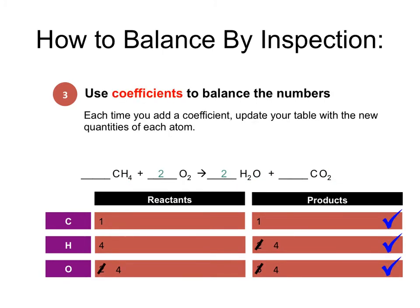Now we're going to use coefficients to balance the numbers. Each time we add a coefficient to the chemical equation, we're going to update the table with the new quantities of each atom. Notice that the number of carbon atoms on the reactant and the product side are already equal, so we're going to focus our attention on the hydrogen. Originally, the hydrogen had 4 atoms on the reactant side and only 2 on the product side. So we're going to place a 2 in front of water — that will change my number of hydrogens to 4 and also change my oxygen number to 4 as well (2 plus 2 is 4). Now, if we look back to the reactant side, there was originally only 2 oxygen, so by placing the 2 on the reactant side I can now change that to 4, and we will see that all the atoms are equal to each other on both sides.